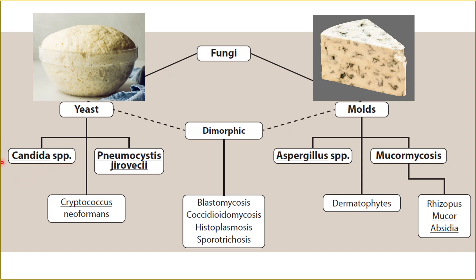For yeast, the most commonly seen yeast that leads to disease is Candida species. Candida species is semi-pathogenic — it is a normal microflora for some tissues like the vagina. Cryptococcus is mostly pathogenic and leads to diseases of the lung, mostly pneumonia in HIV patients. For molds, we have Aspergillus and Mucormycosis, which usually lead to dermatomycosis. These are the most commonly seen pathogenic and semi-pathogenic fungi.